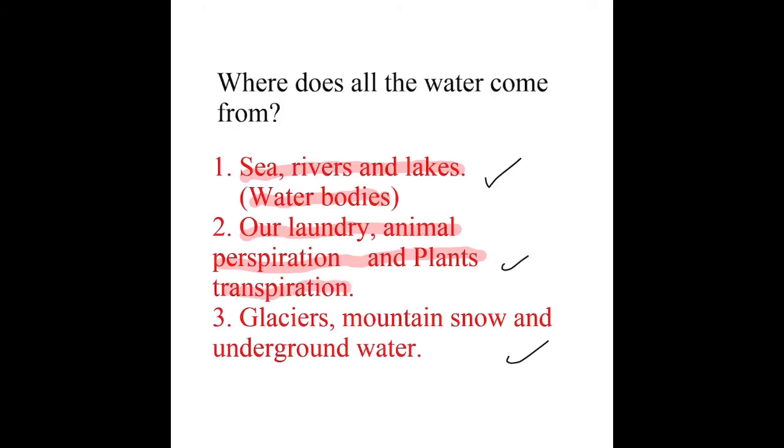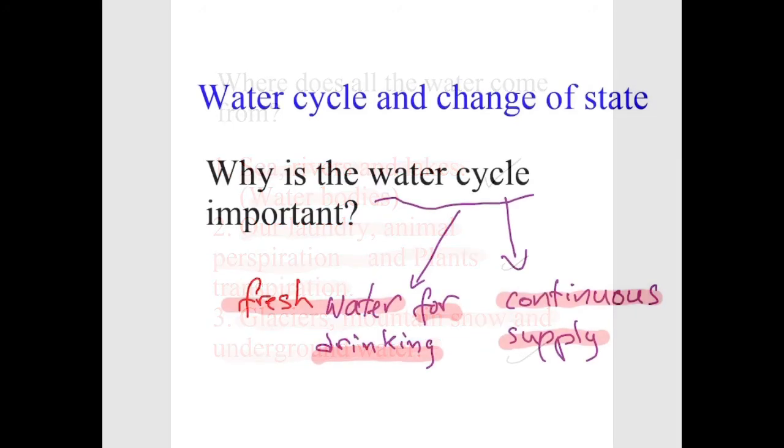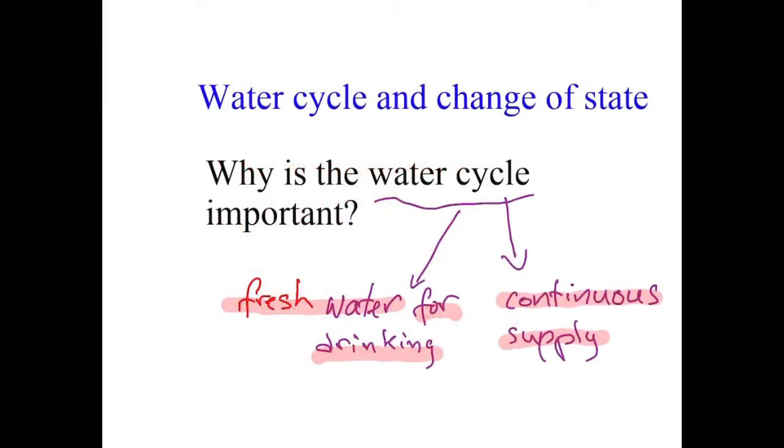Plants don't perspire, they transpire. They give out water vapor through their stomata when they breathe. Some of the water actually comes from the glaciers, the mountains, snow, and underground water. This is one of the common questions that is always asked in the exam and it is important to know how to answer this question.